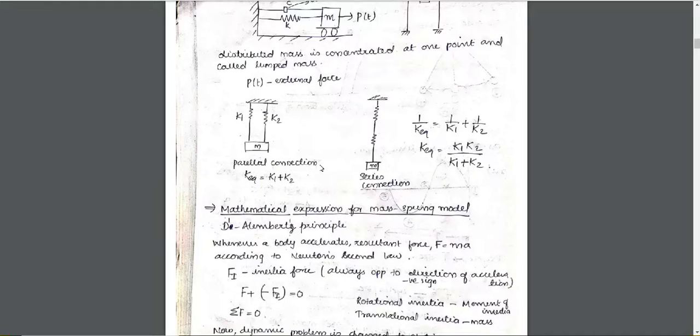We are going to write the mathematical expression for the mass-spring model. We apply D'Alembert's principle: the sum of forces equals zero, that is, external force minus inertia force equals zero.